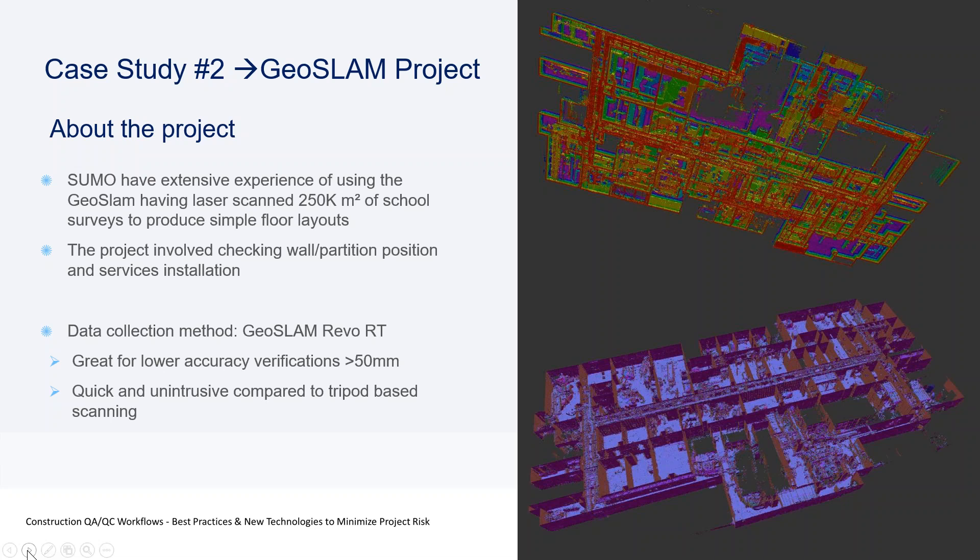The GeoSlam is not as accurate — you're typically looking at plus or minus 30 millimeters across the whole building — but you can cover huge areas. We're talking about 6,000 to 10,000 square meters in a day, compared to 800 to 2,000 square meters with traditional scanning. We were using GeoSlam with partitions and services for this biomedical facility because if a wall is within 50 to 100 millimeters of its position, it's probably OK. Likewise with ductwork. We certainly wouldn't use GeoSlam data for steelwork verification — you need the accuracy of high-definition scanning for that.